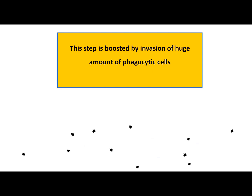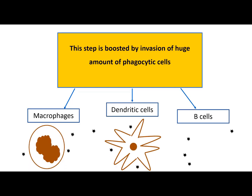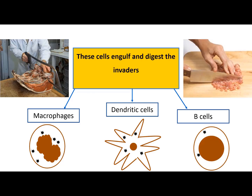The neutrophils' phagocytosis step is boosted by an invasion of huge amounts of other phagocytic cells, such as macrophages, dendritic cells, and B cells. These cells engulf and digest the invaders.